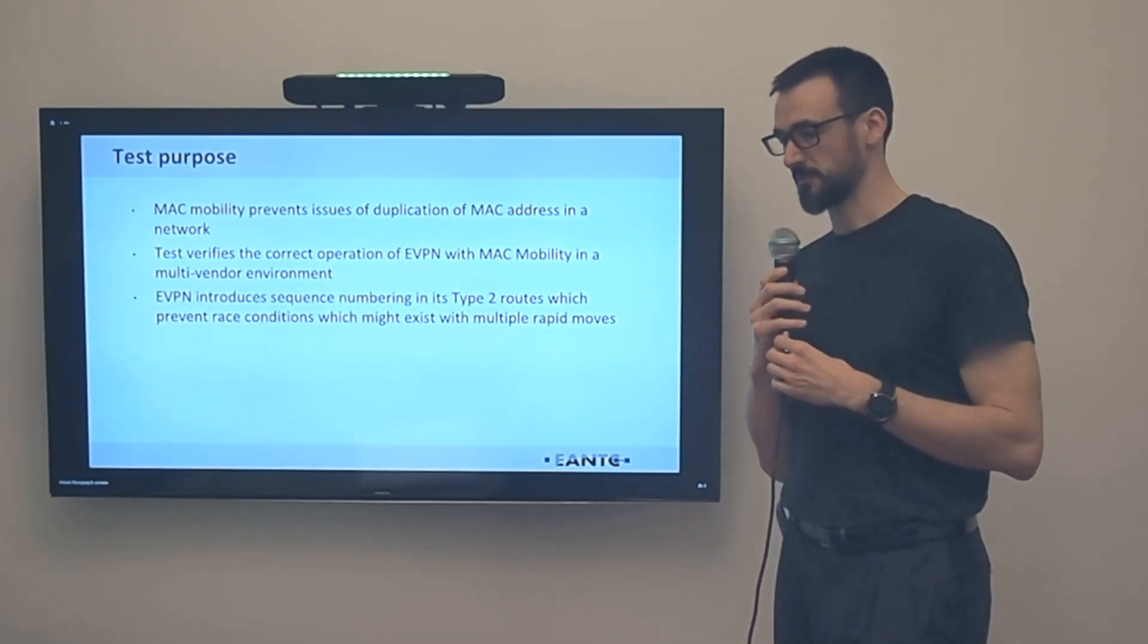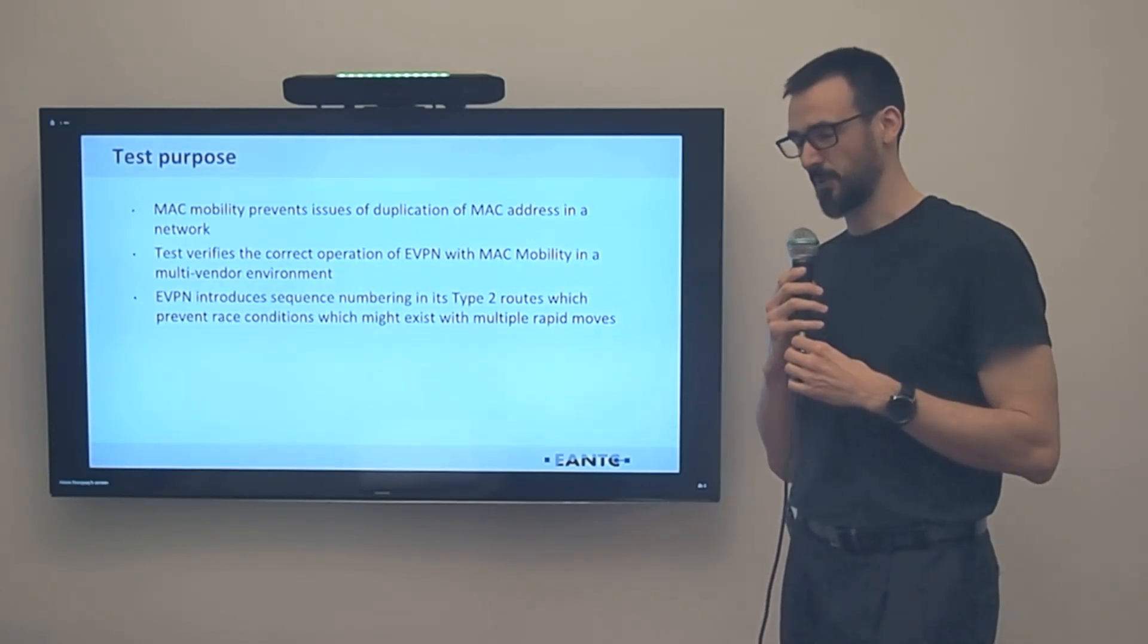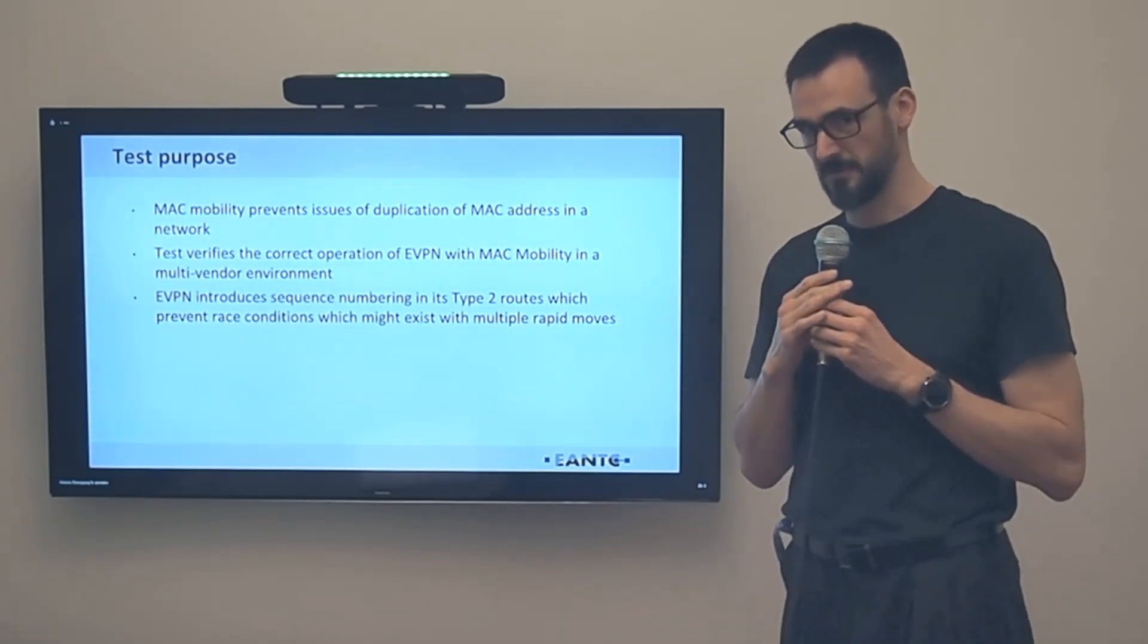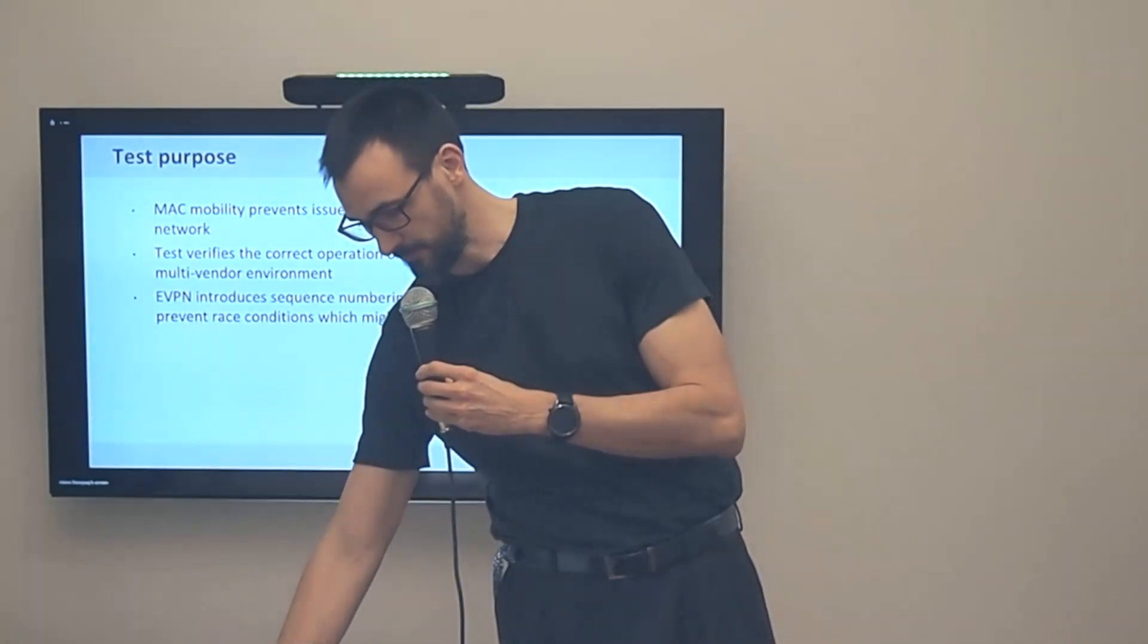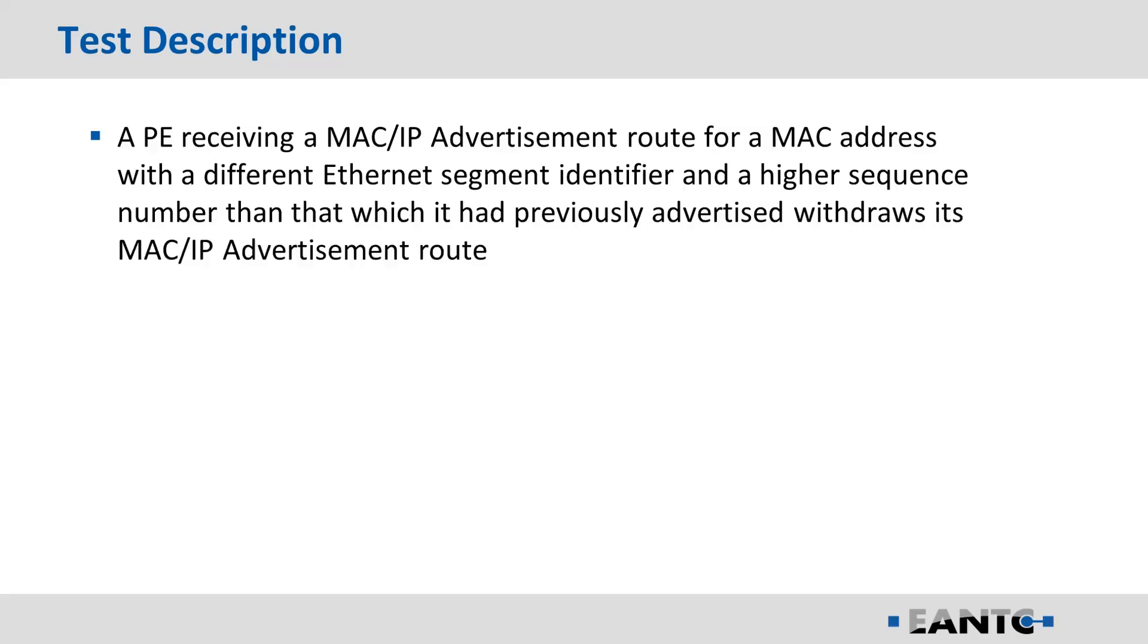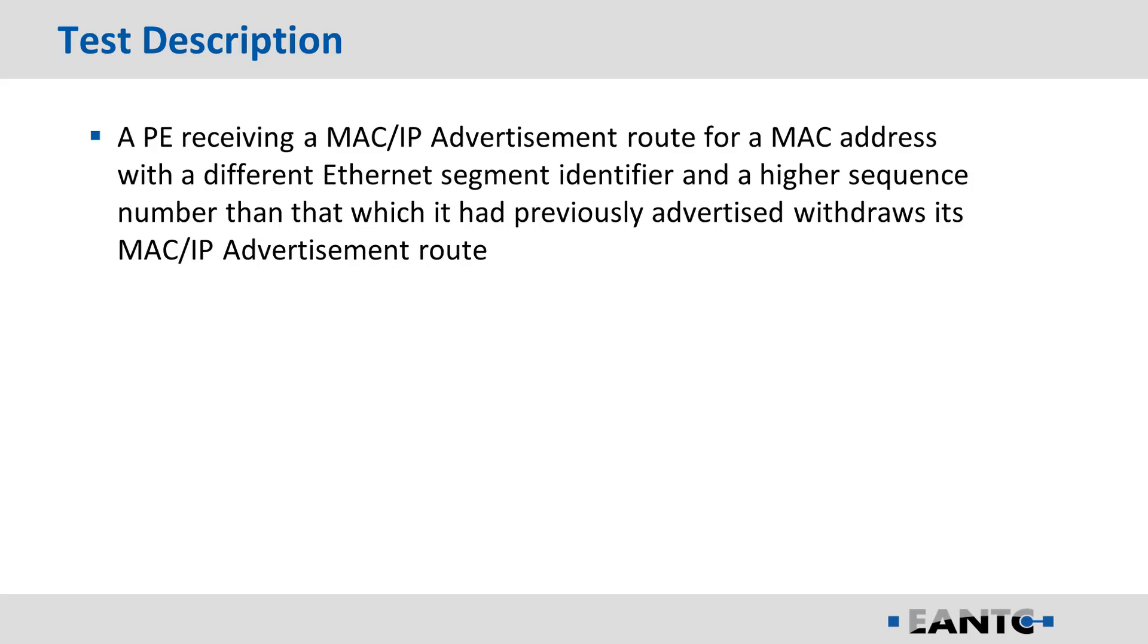The use case is for, obviously, the host, such as virtual machines, where the host can move across multiple sites behind different PEs or VTEPs in a data center or across data centers. I've described briefly the way of operation. The PE receiving a MAC IP route type 2 will advertise that MAC with an incremented Ethernet segment identifier and an increased sequence number.